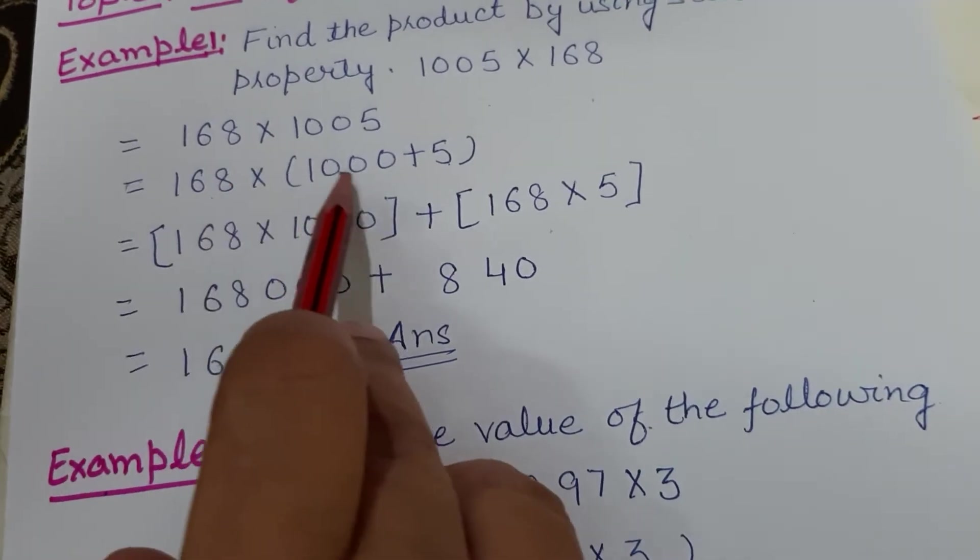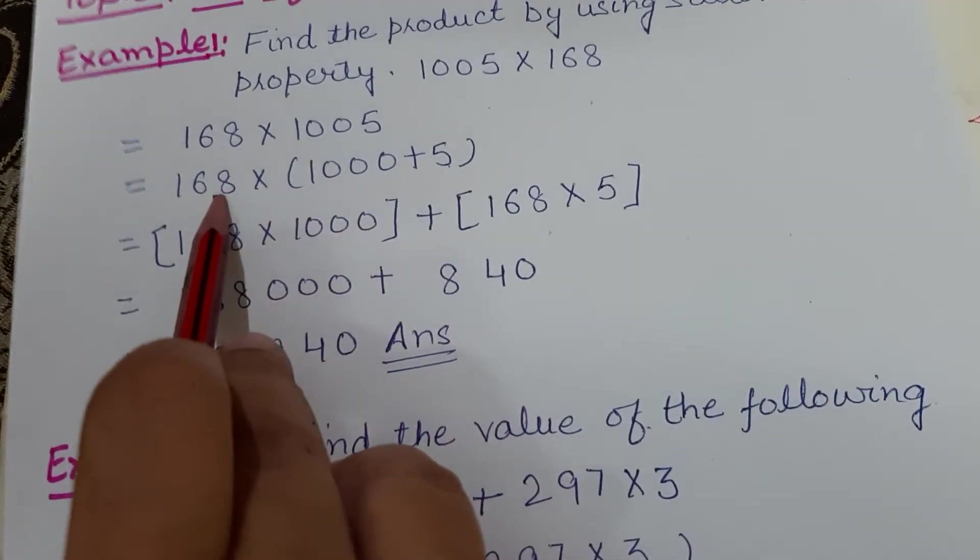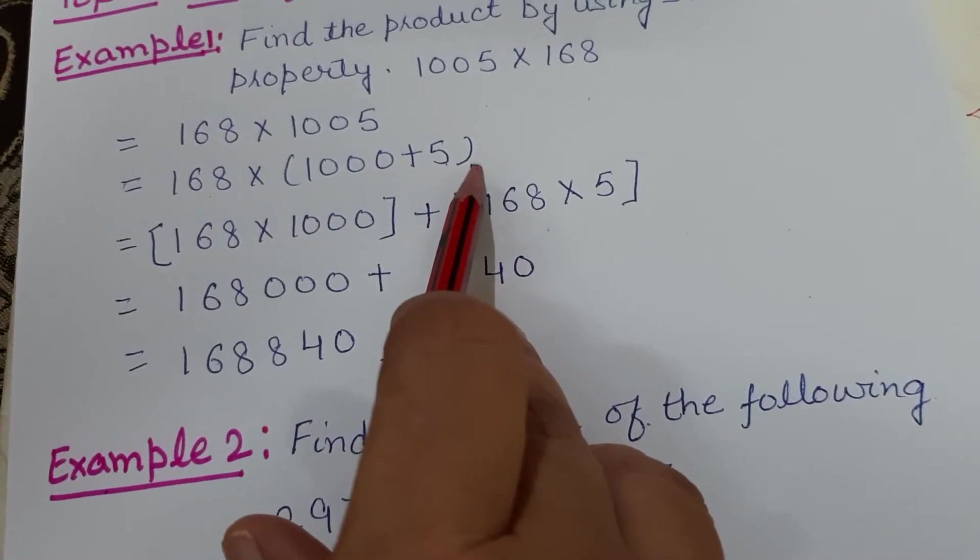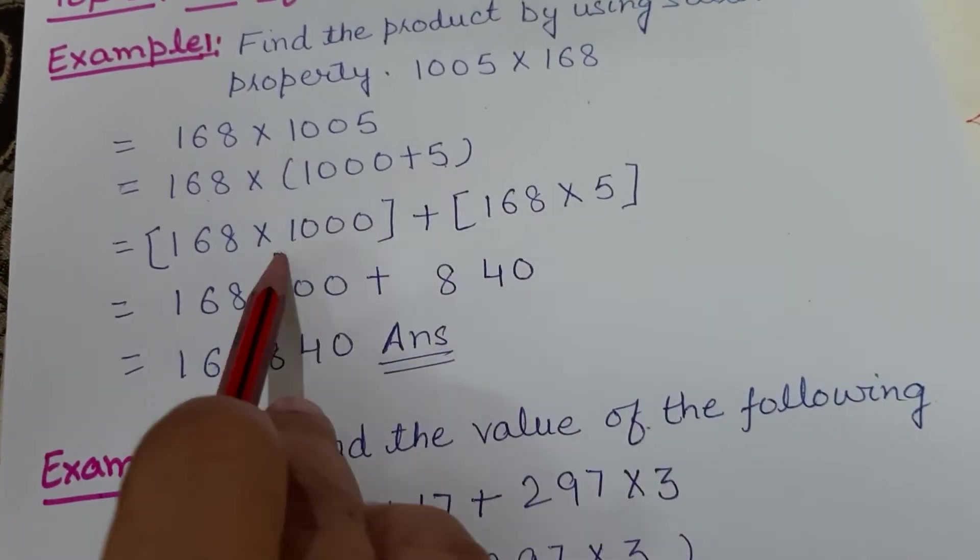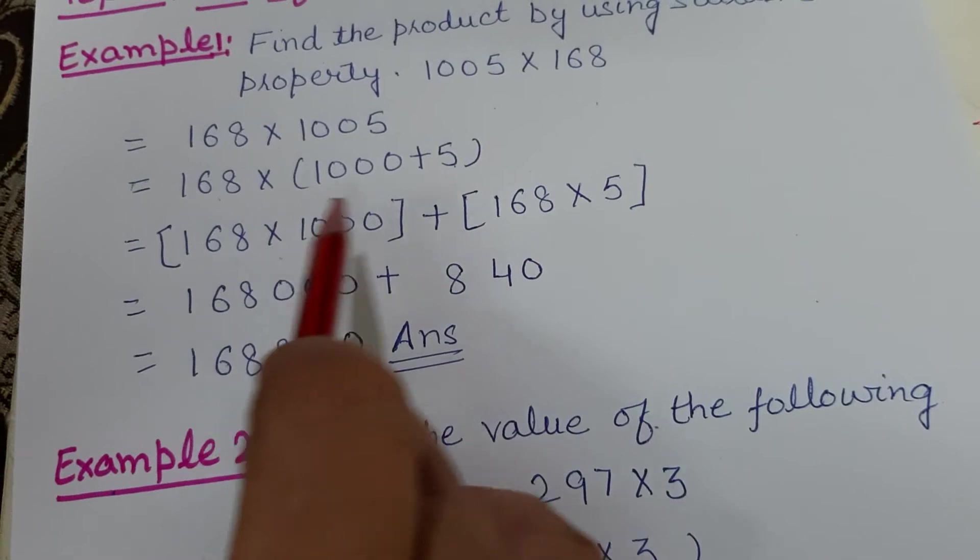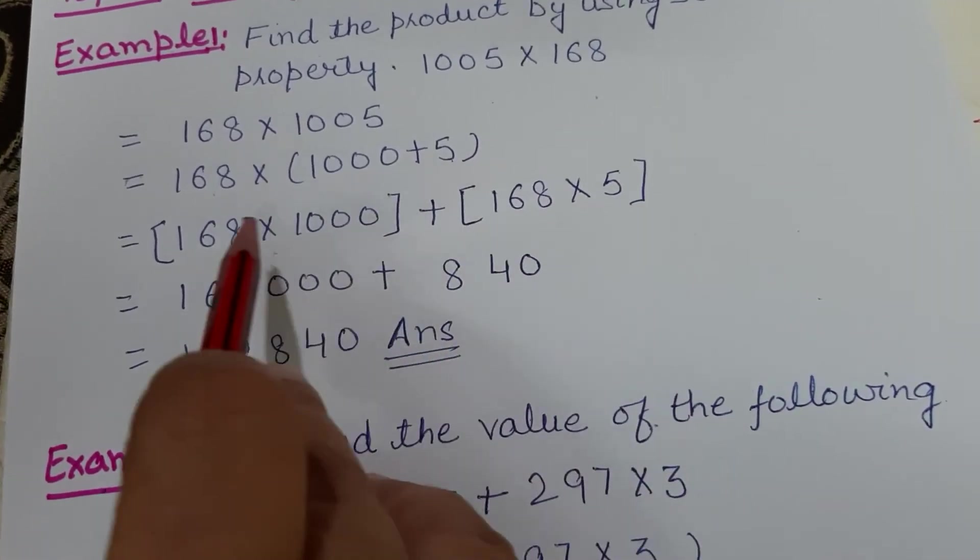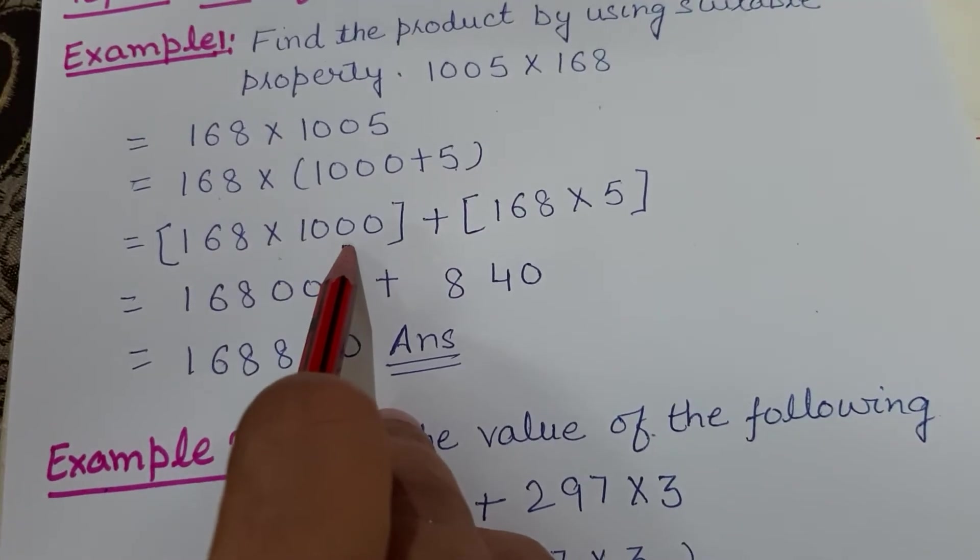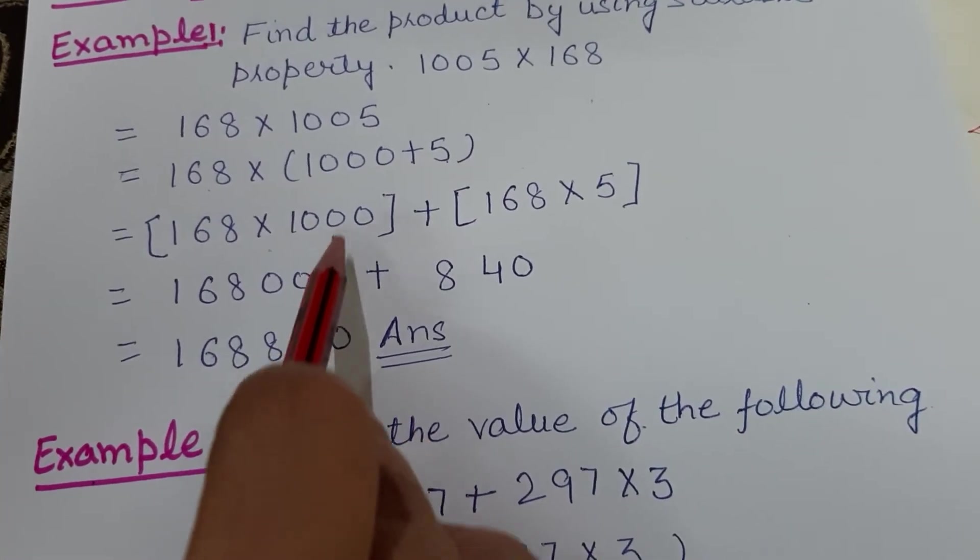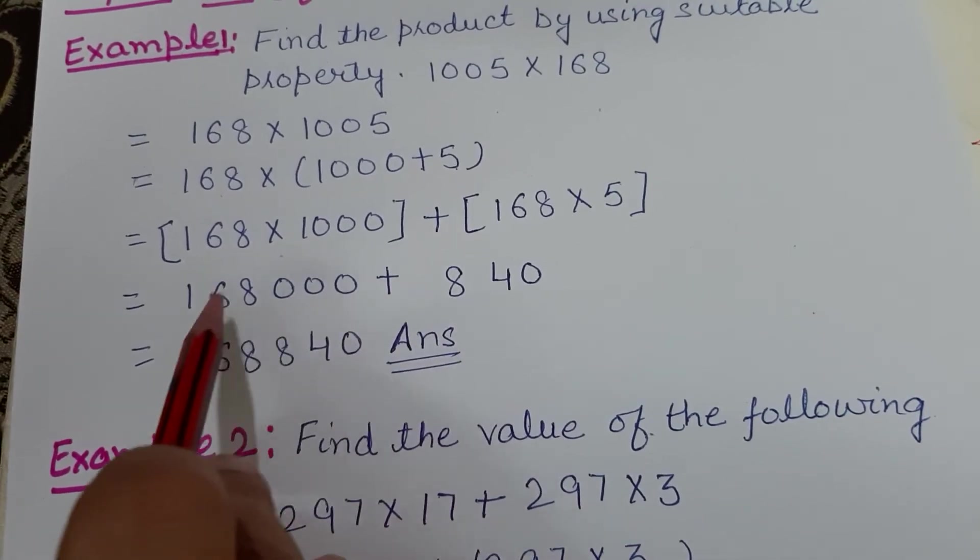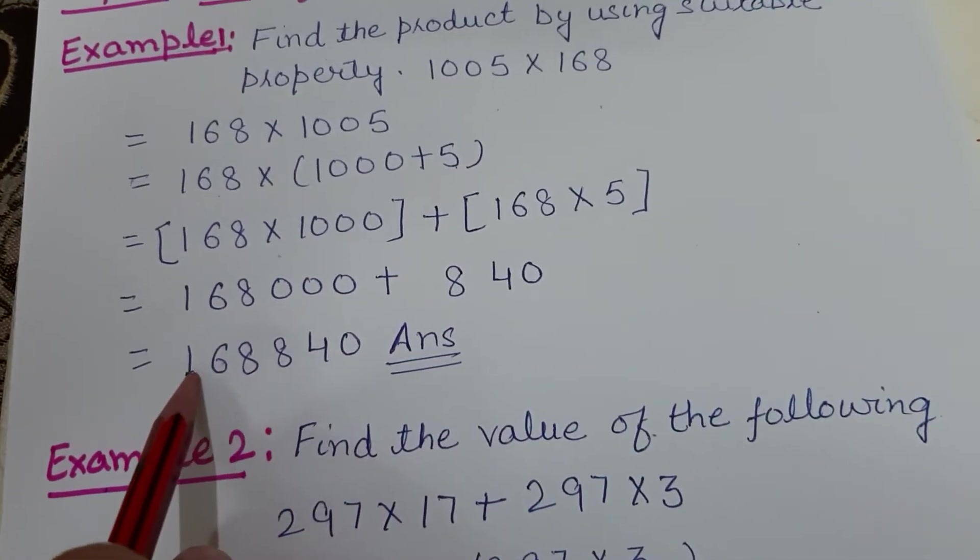Now we will first solve the brackets. You know how to multiply with tens, hundreds, thousands—simply write the zeros. Three zeros with 168 gives us 168,000. Now plus, same sign. 168 into 5 you can multiply horizontally: 5×8 is 40.